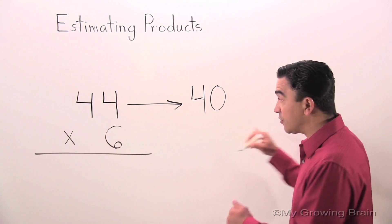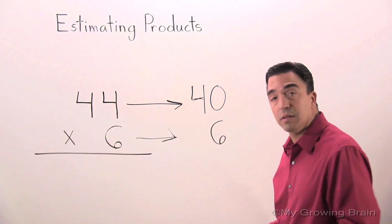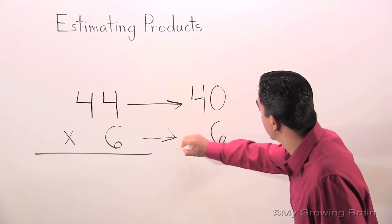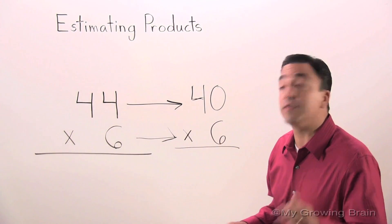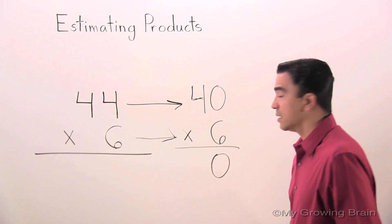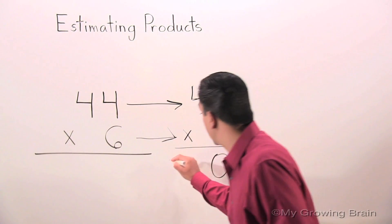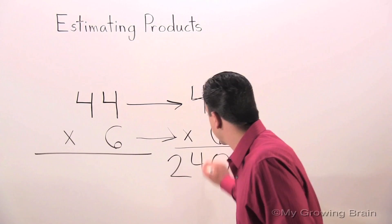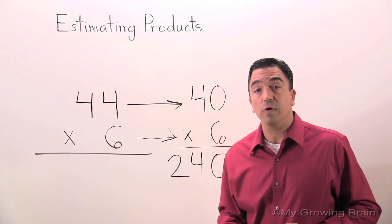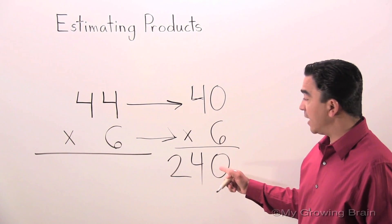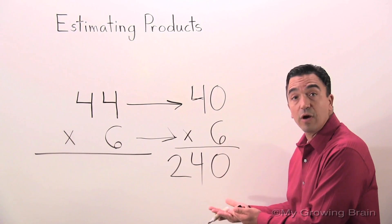I'm going to slide the 6 right over. And we're going to multiply it. 6 times 0 is 0. 6 times 4 is 24. So, when we look for an estimate for 44 times 6, we get 240. That's our estimate.